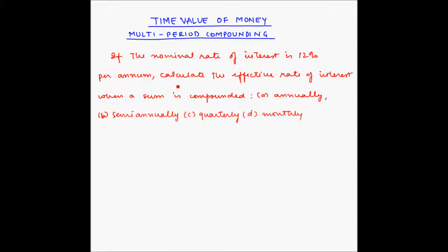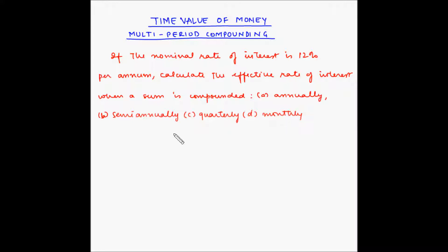Let us take a look at an example to understand the concept of multi-period compounding. If the nominal rate of interest is 12% per annum, calculate the effective rate of interest when a sum is compounded annually, semi-annually, quarterly, and monthly.